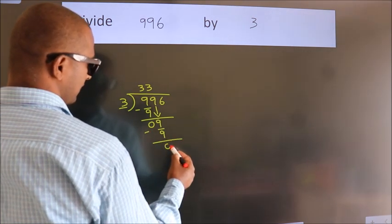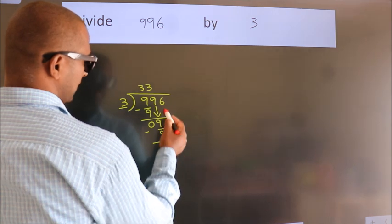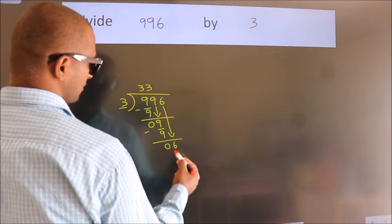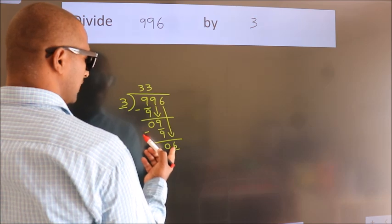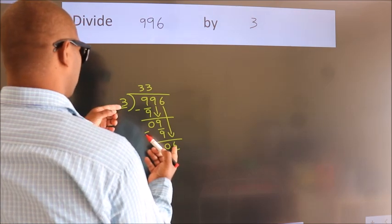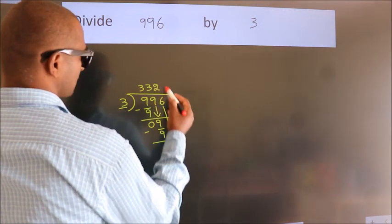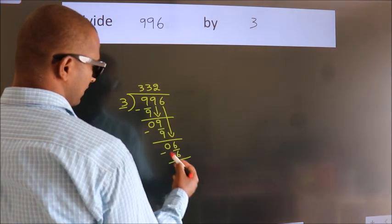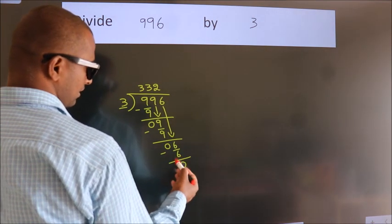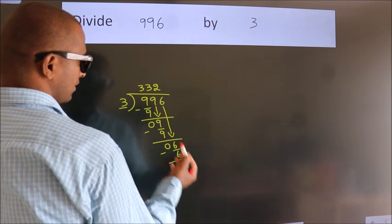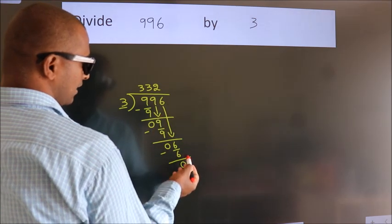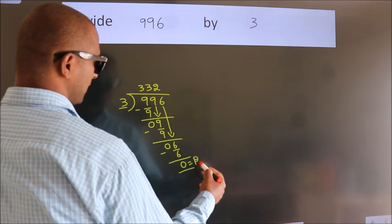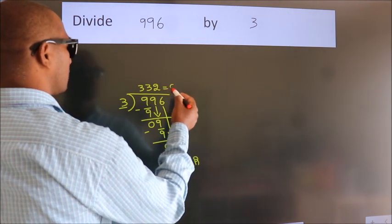After this, bring down the beside number, so 6 comes down. When do we get 6 in the 3 times table? 2 threes are 6. Now we subtract — we get 0. No more numbers to bring down, so we stop here. This is our remainder and this is our quotient.